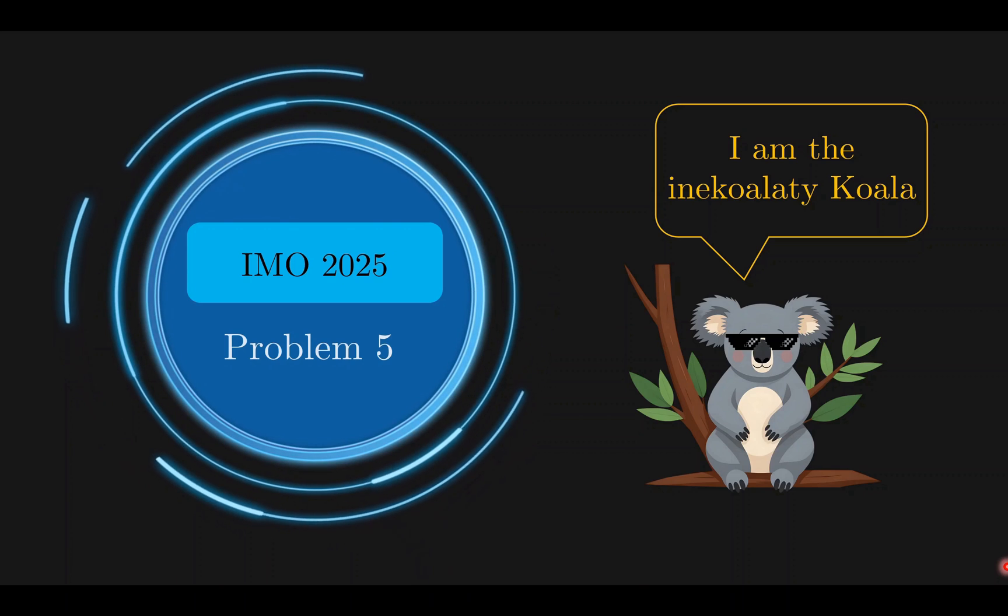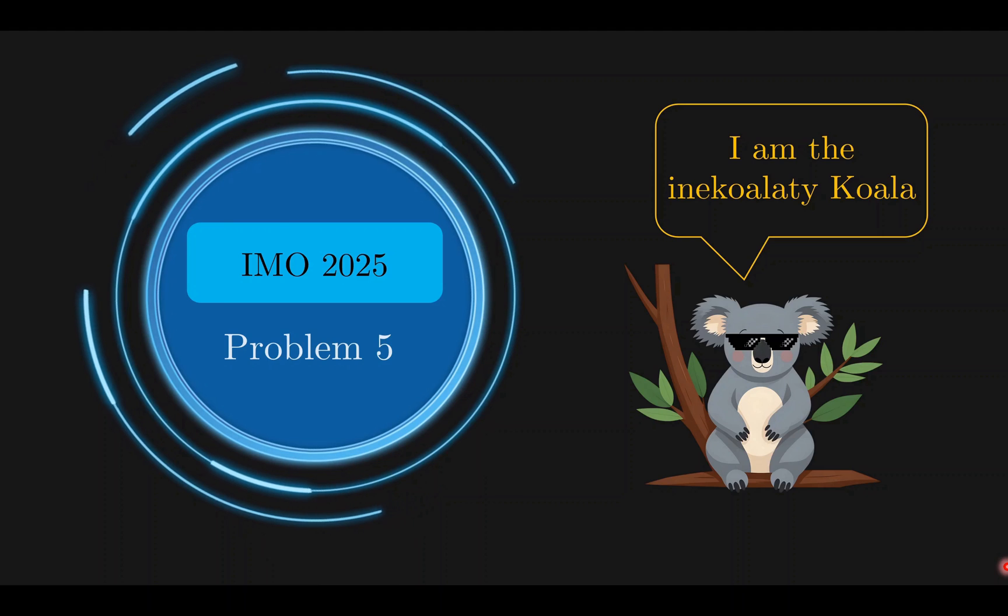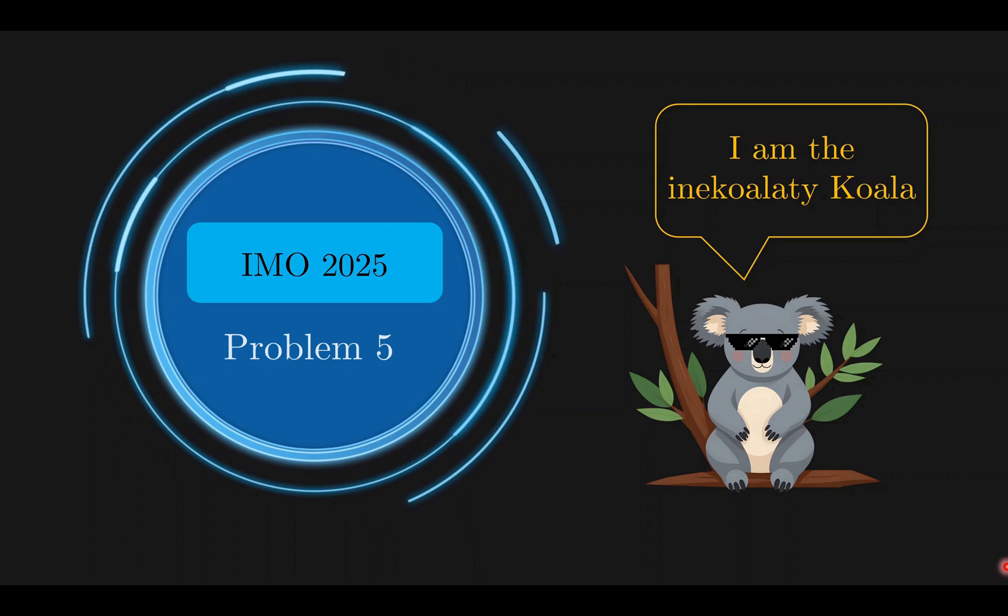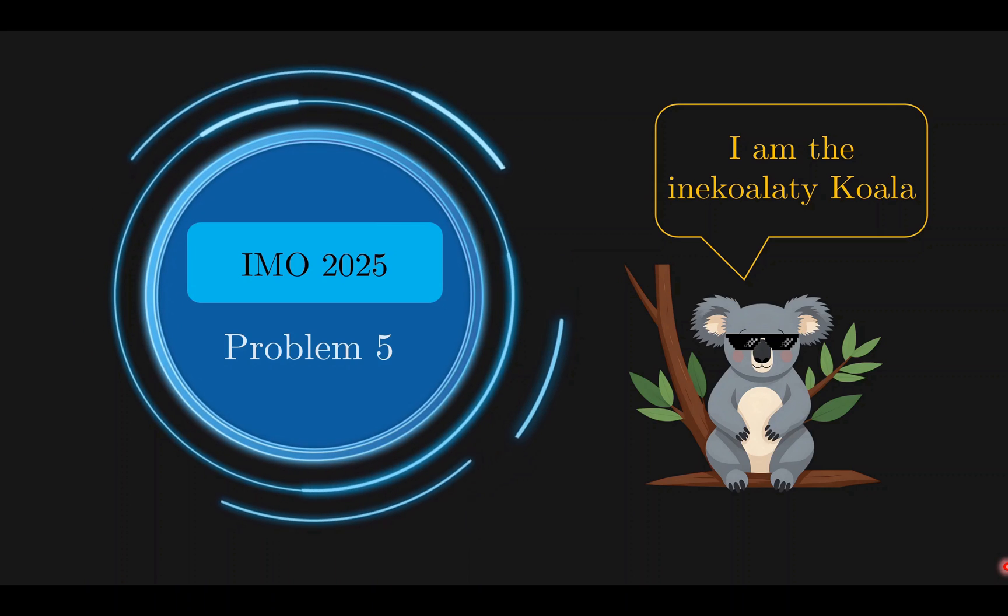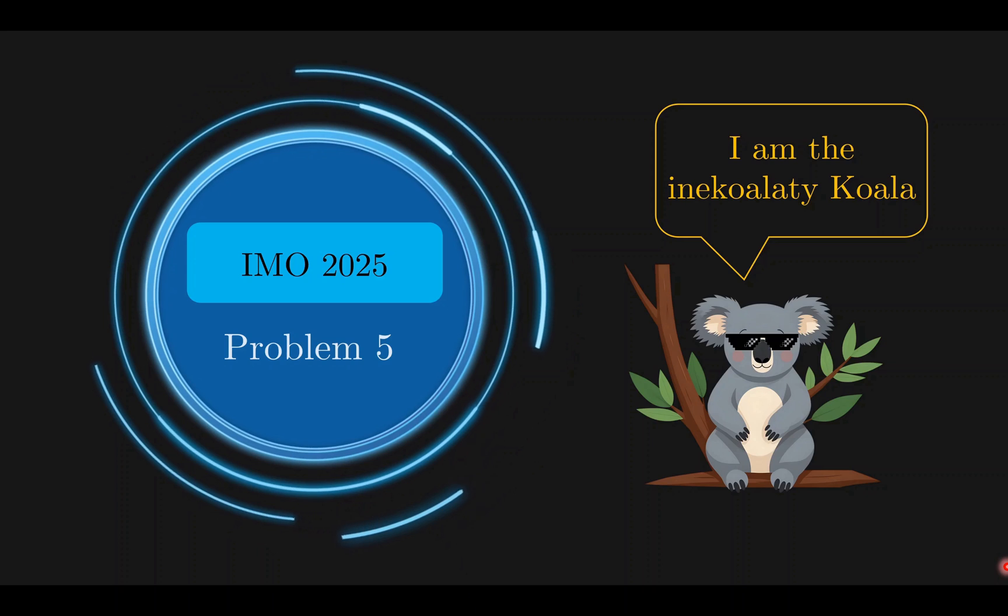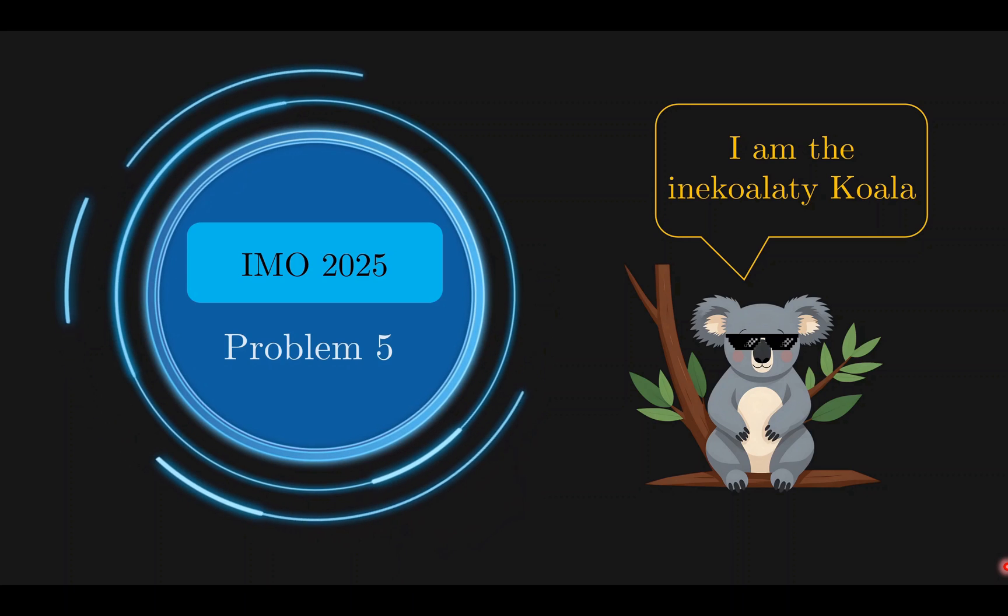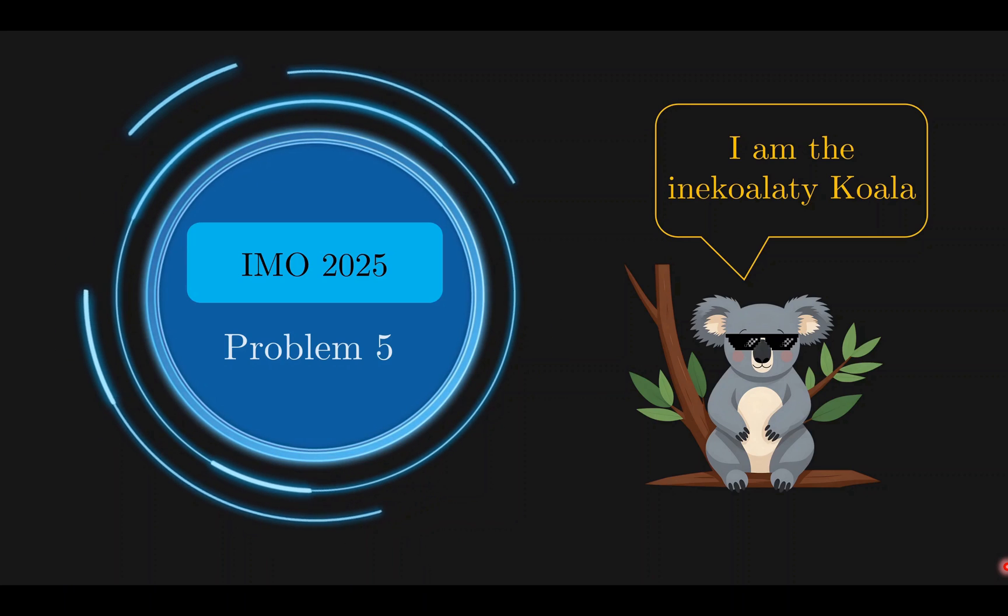Hello everyone, welcome back to DaikinCard. So right now, we'll be taking a look at problem 5 of the IMO 2025. Now this is my favourite problem from the entire contest, and it features a game involving inequality. That already sounds interesting enough. So let's take a look at the problem statement.